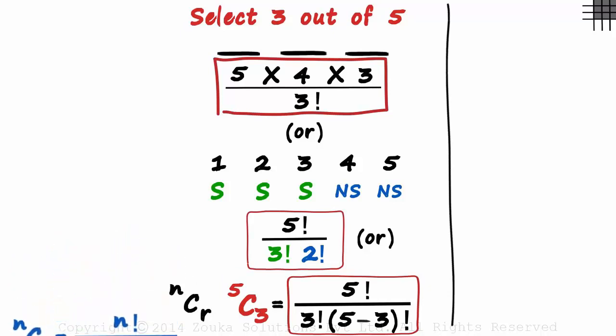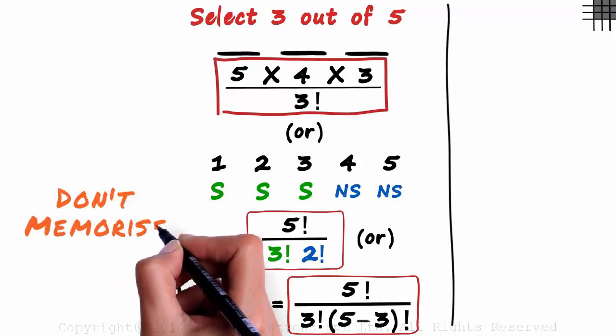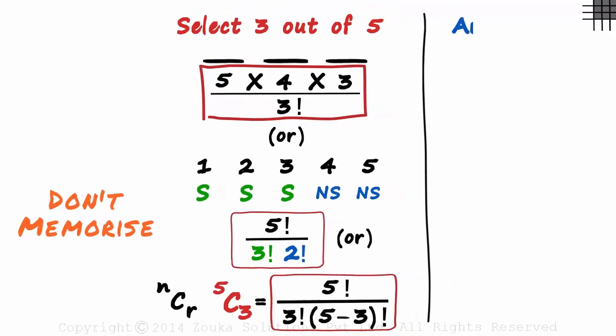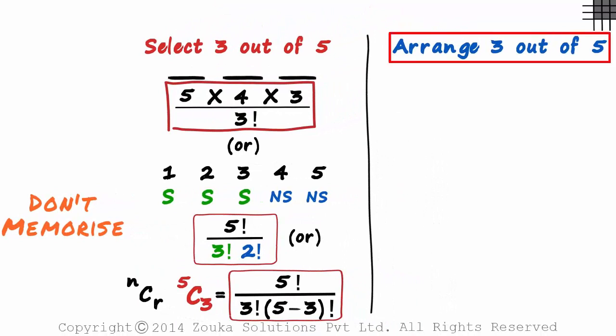And remember the golden rule. Don't memorize. In the next part of the session, we will see the number of ways in which we can arrange three out of five.